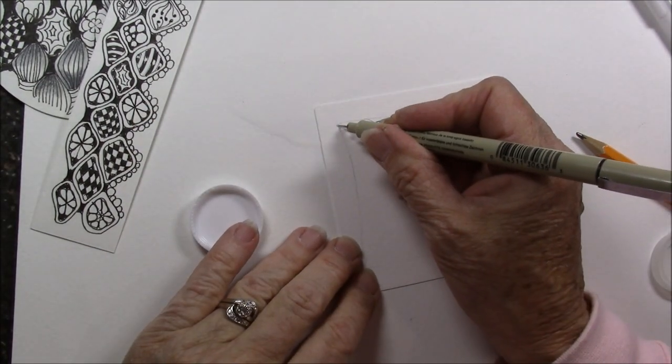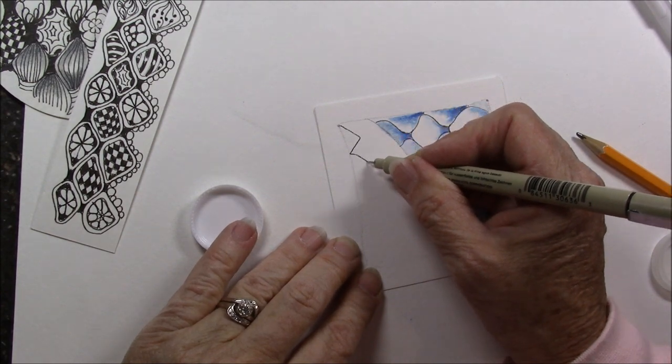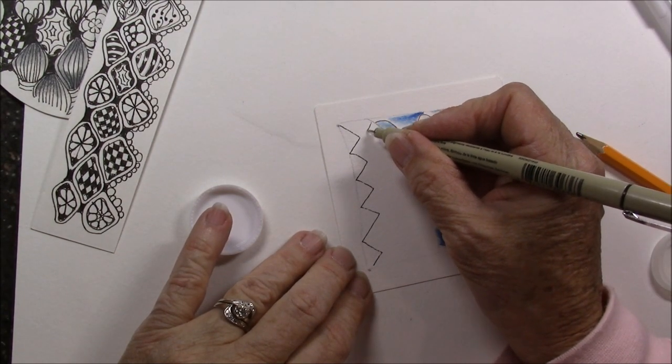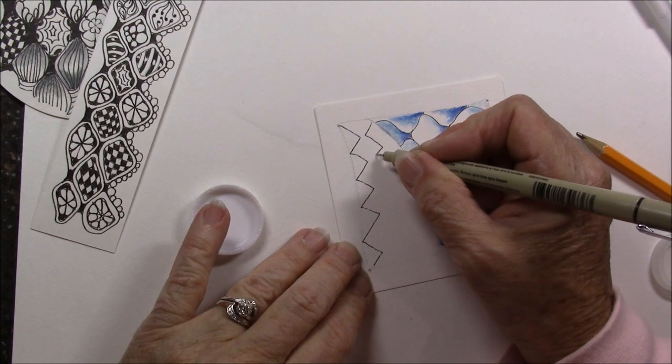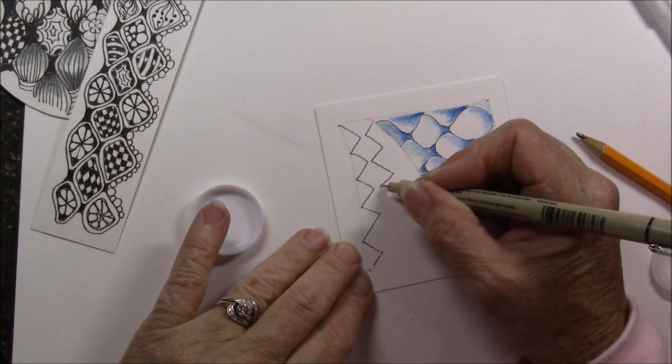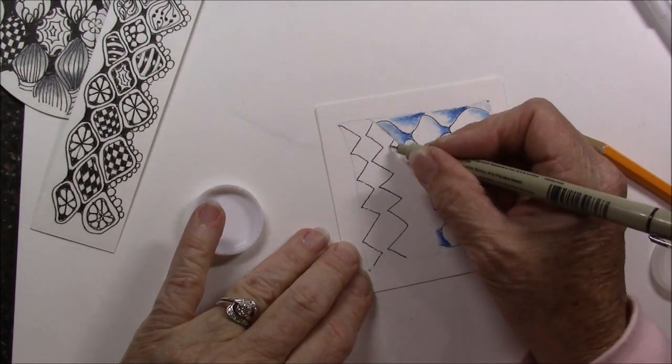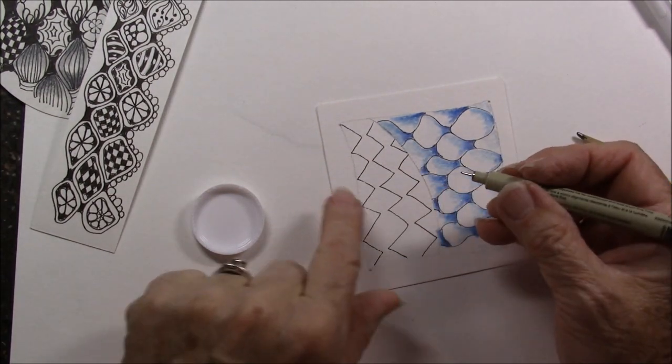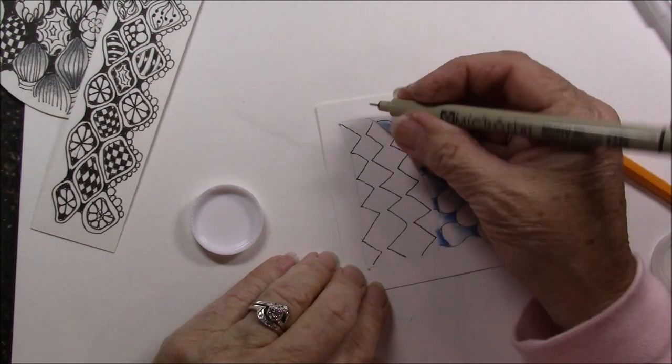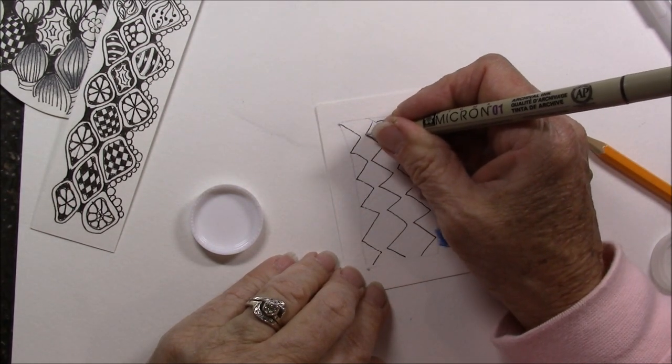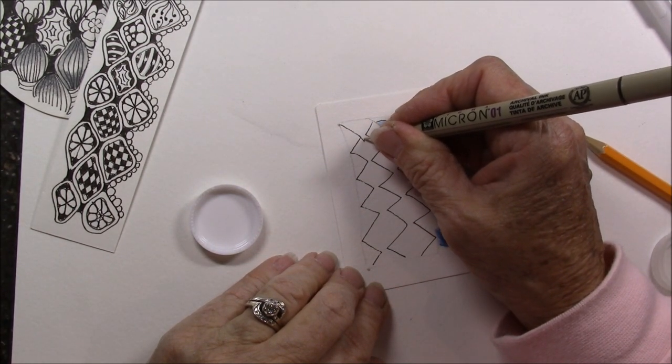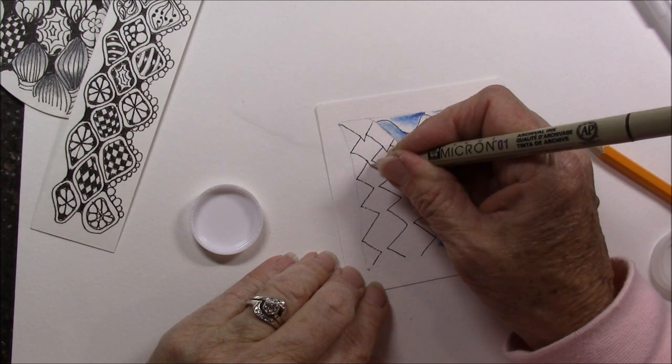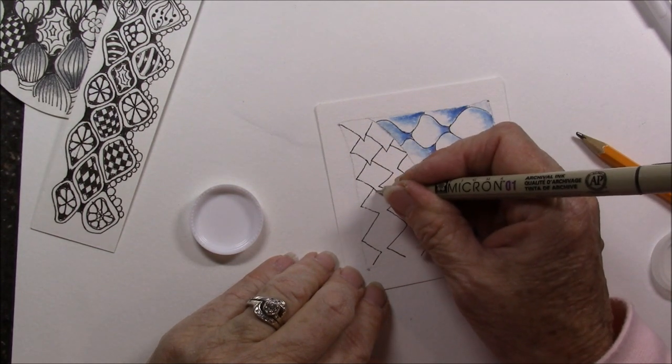Now I promised you we'd do something at the bottom. You can also do Glace that is zigzag. Again we're going to mirror what we did but we don't want them to touch. We want those points to come so they're kind of over each other.